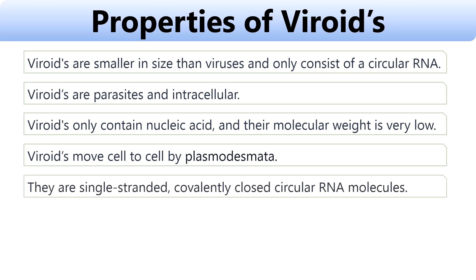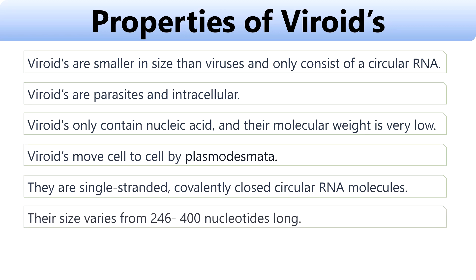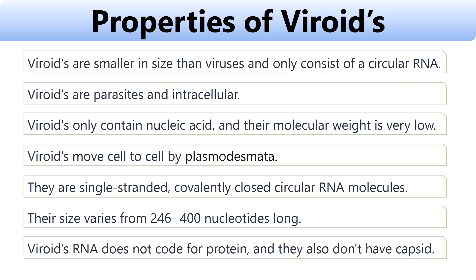Viroids are single-stranded covalently closed circular RNA molecules. The size of viroids varies from 246 to 400 nucleotides long. Viroids' RNA does not code for protein and they also don't have any capsid. Capsid is a protein coat found in viruses.